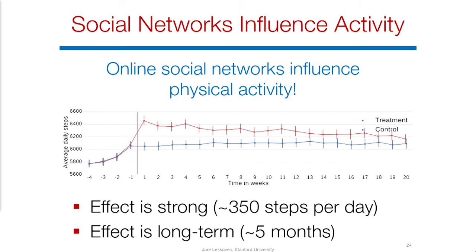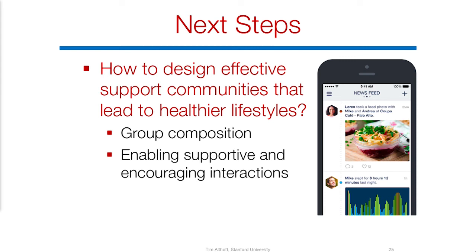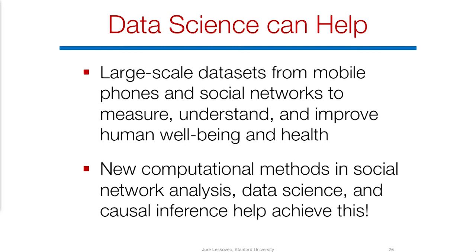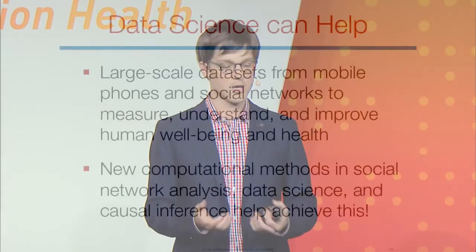This is just one example of a study using large-scale data captured by the sensors we carry in our pockets. The next steps are how to design effective social support communities that lead to healthier lifestyles — how to compose groups, enable supportive and encouraging interactions, and support mental health through conversations. Large-scale datasets from mobile phones and social networks allow us to measure, understand, and improve human well-being and health, requiring new computational tools in network analysis, data science, and causal inference.